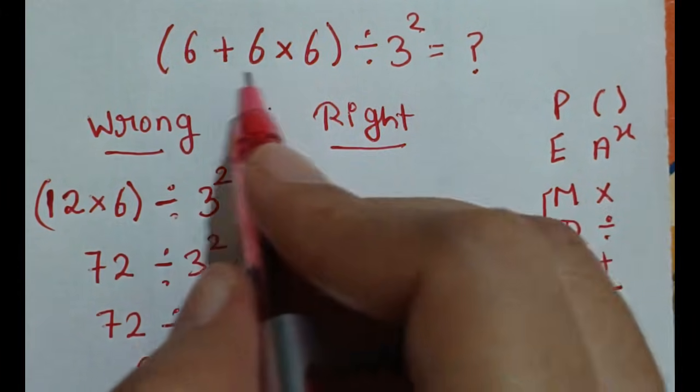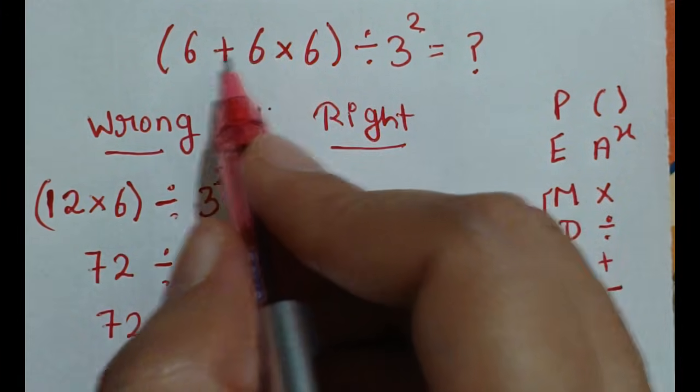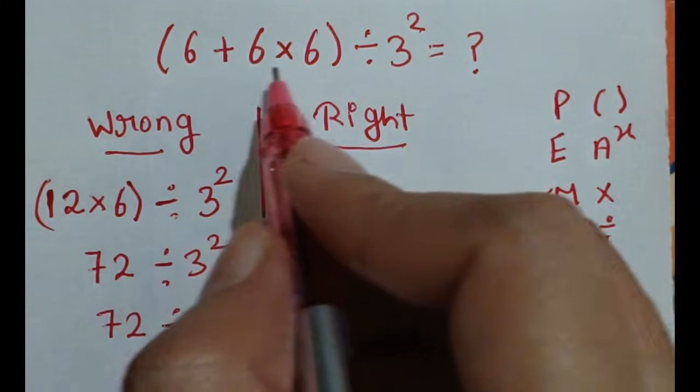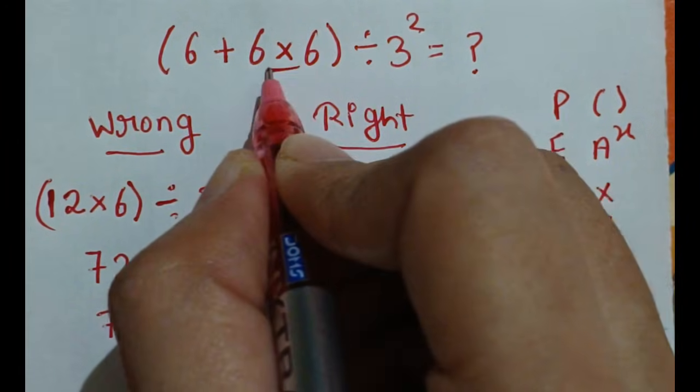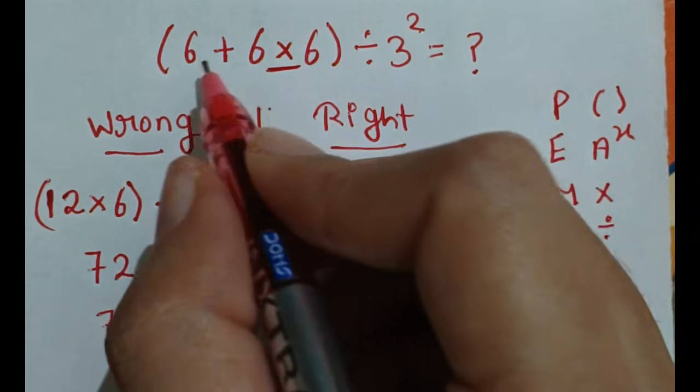So here first we will solve this part. In this part, multiplication and addition are there. So first we will solve this, because multiplication has higher priority than addition.